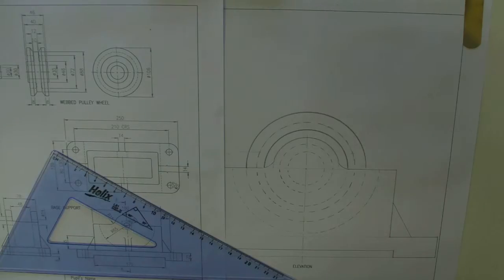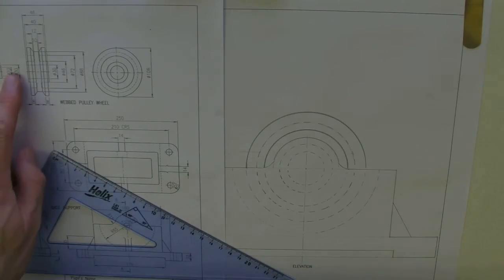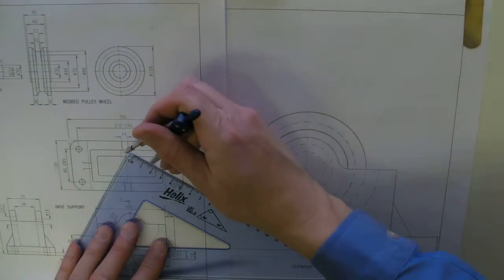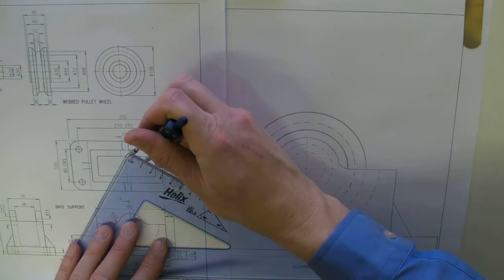Now we need to deal with the bolt, the axle bolt and the bush as well. The inside of the bush has got a diameter of 20. So again, it's going to be hidden detail. So I'm just going to set this up to 10.